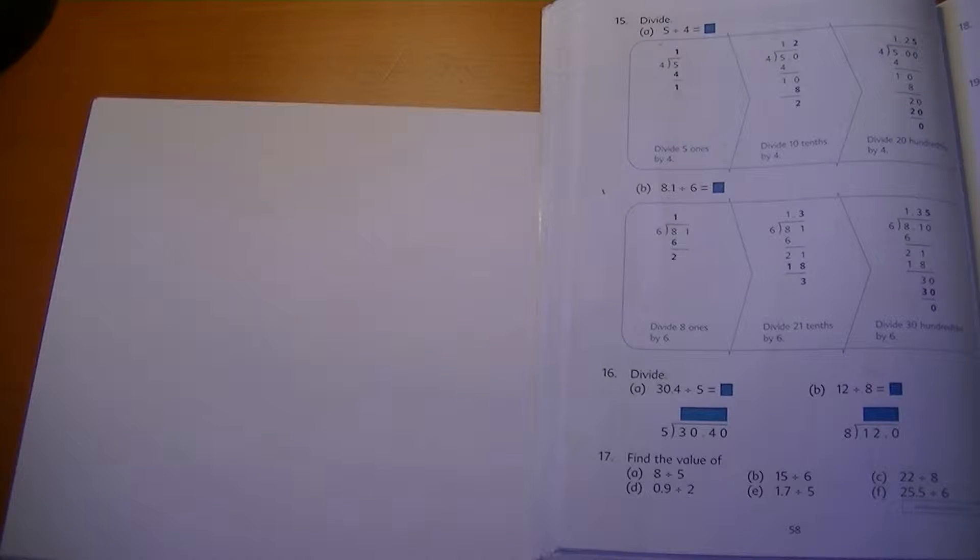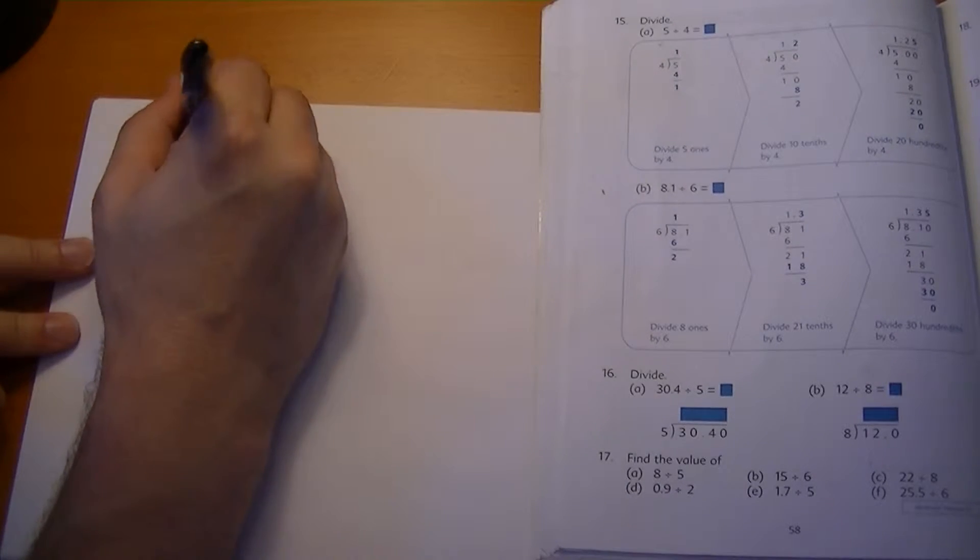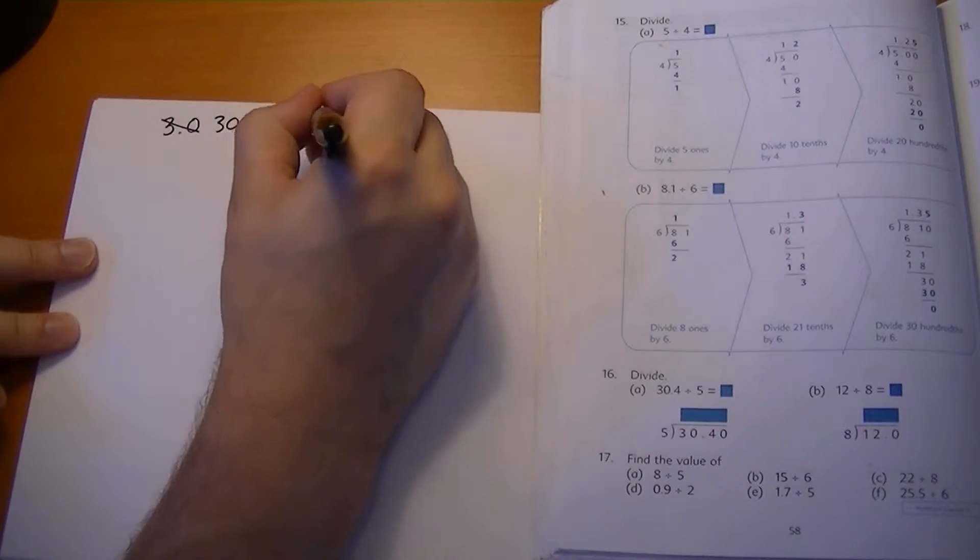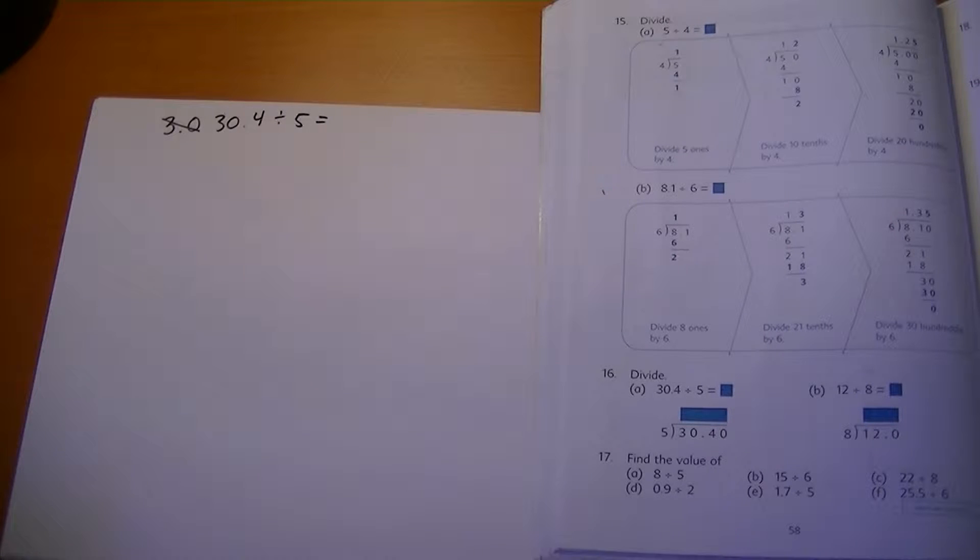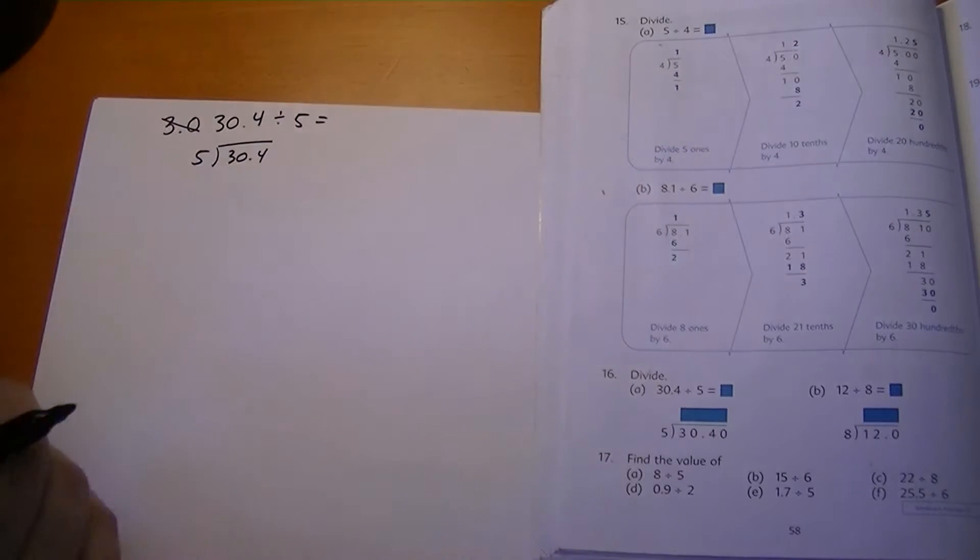Why are you using several different colors? Because I like colors. Colors are cool. So the first one is 30.4 divided by five equals something. So what do we do? What's the first thing we do? We put it in a long division setup. Which one goes on the inside? Which one goes on the outside? 30.4 goes on the inside. Let's build a house around 30.4. There we go.